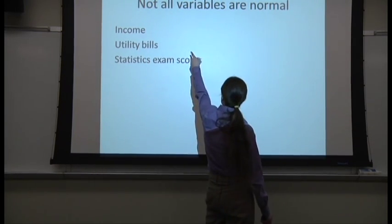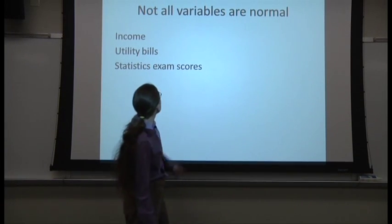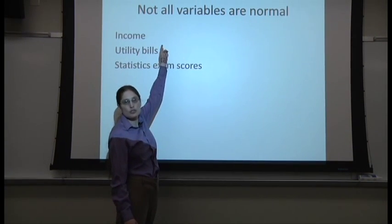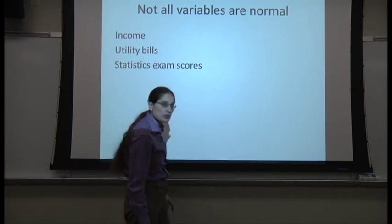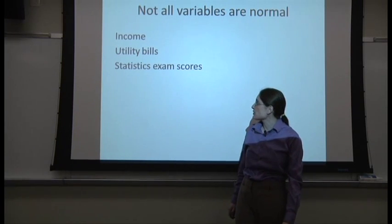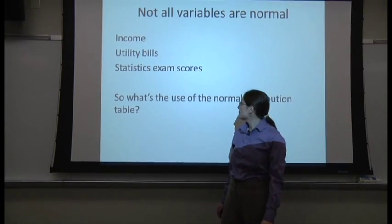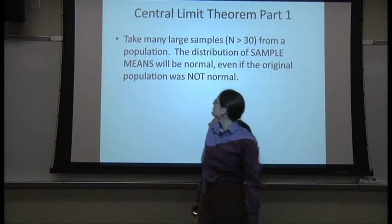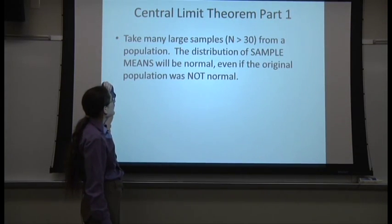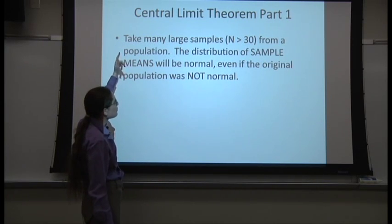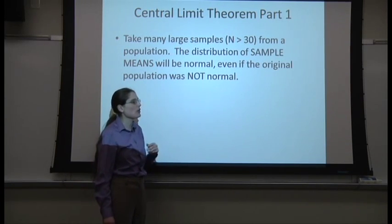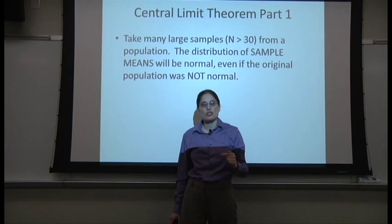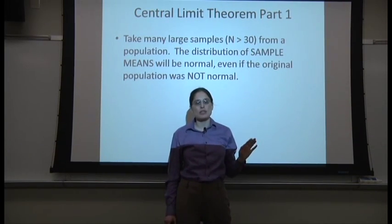So not all variables are normal. People's income is not normally distributed. When I give a test, most of the time the scores are not normally distributed. When you take multiple large samples from a population, the distribution of sample means is normal, even if the original population was not remotely normal.